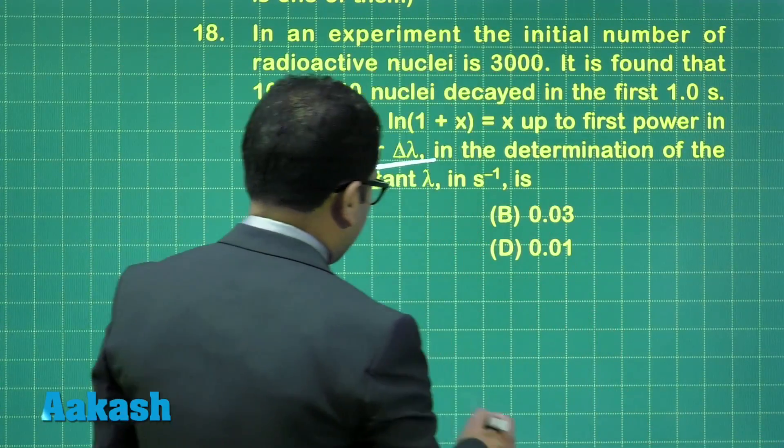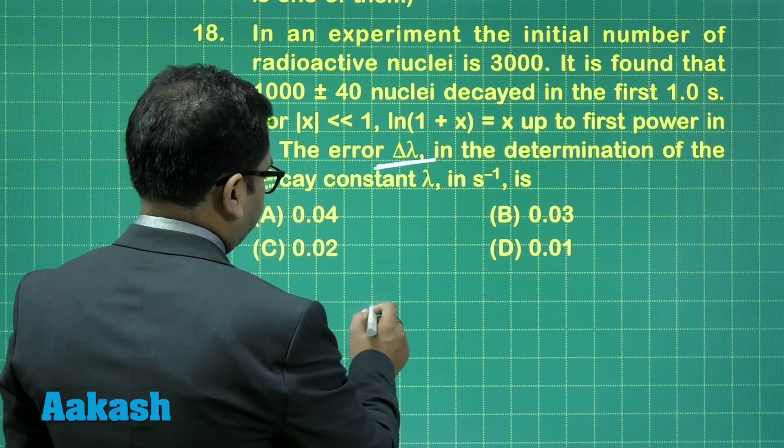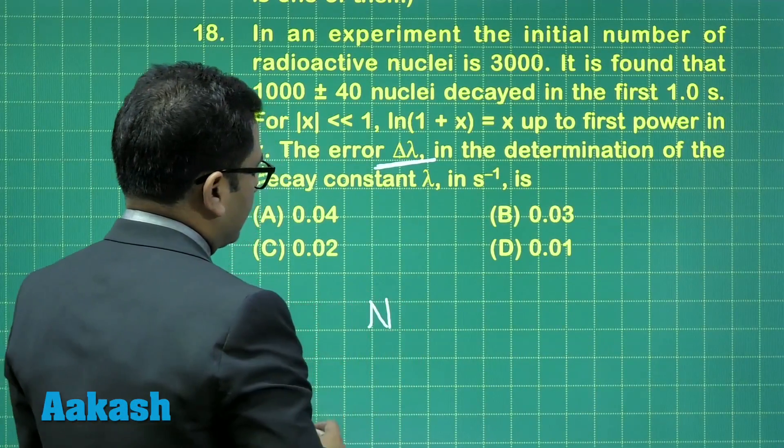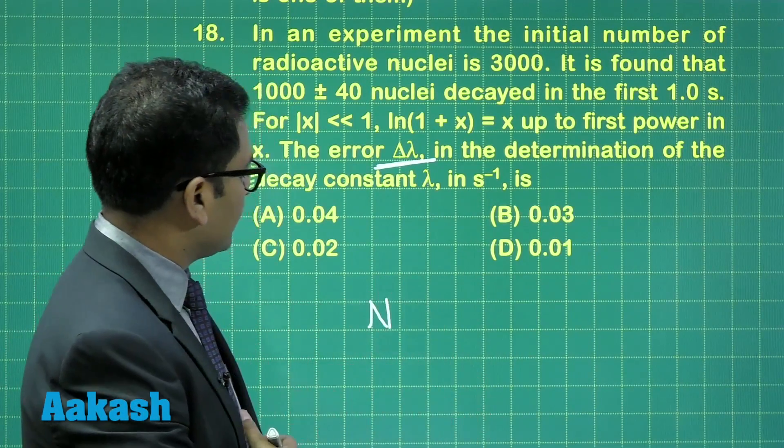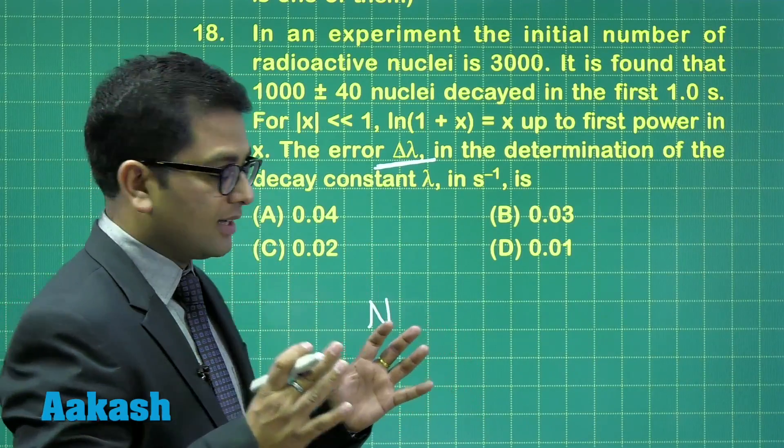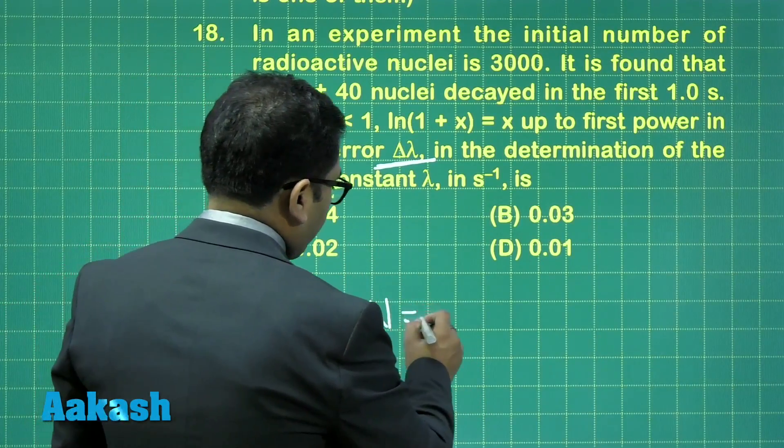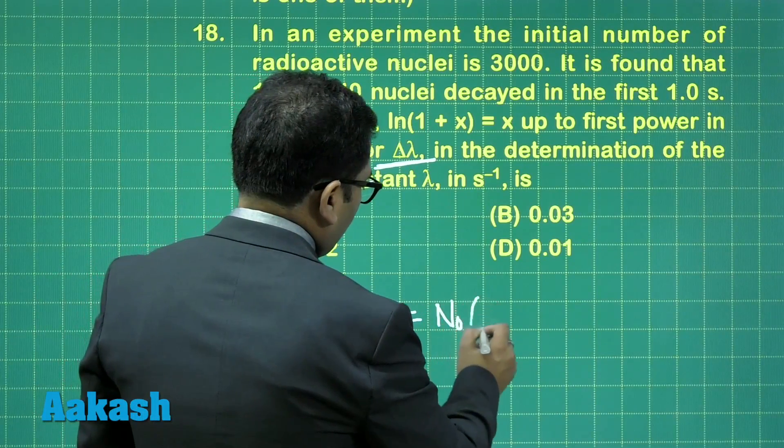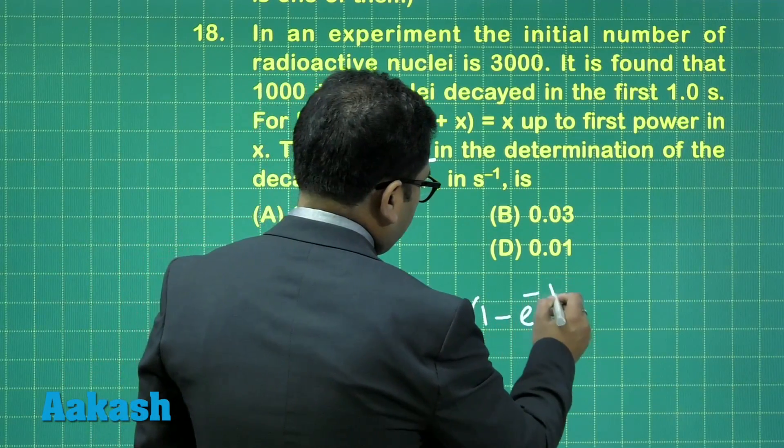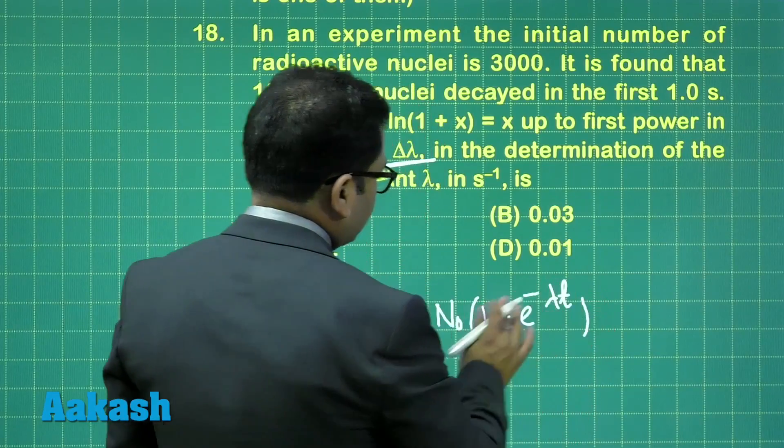The first thing is, I will be defining N as the number of nuclei which has been decayed. So that is equal to N naught times 1 minus e raised to the power minus lambda times t. Reason being straightforward.